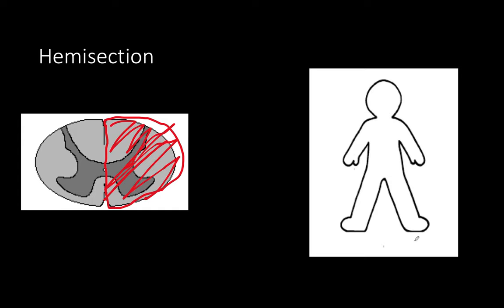Brown-Séquard hemi-section — somehow people are getting stabbed through half their spinal cord. With a hemi-section at T1, you expect ipsilateral motor paralysis below the lesion and contralateral loss of pain and temperature.